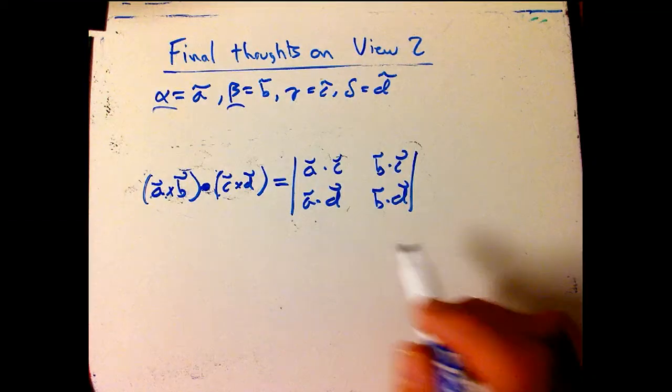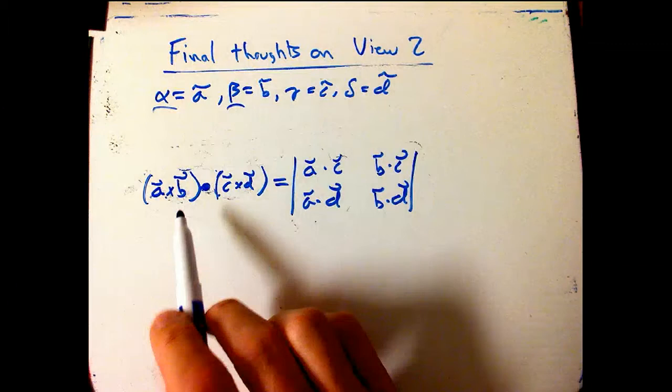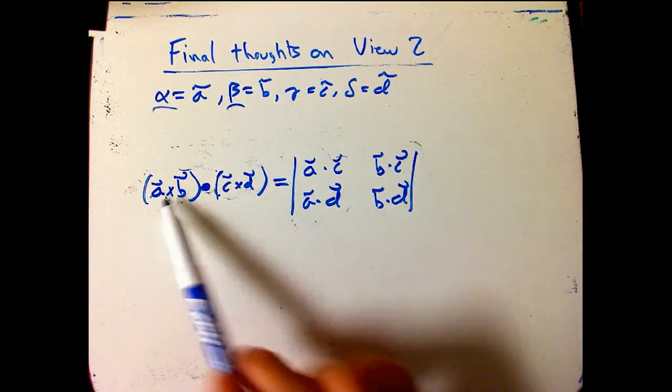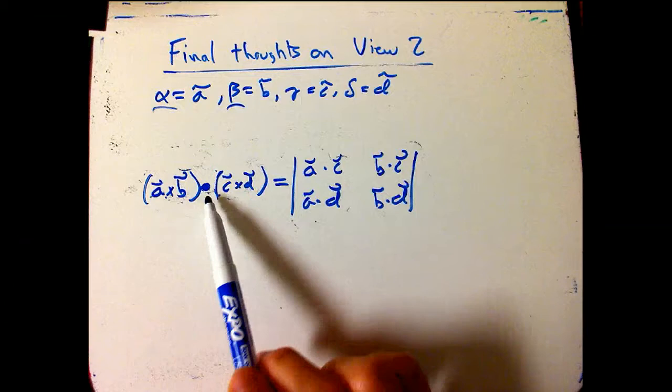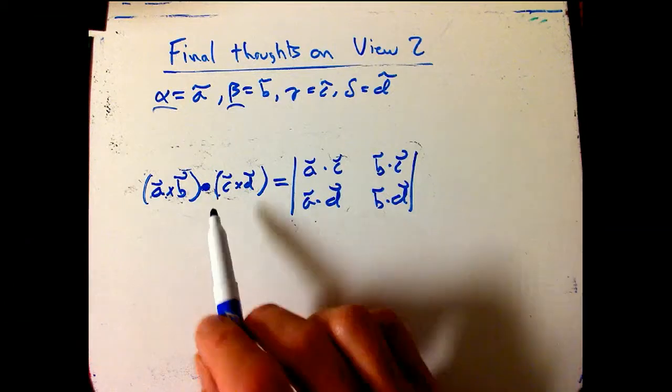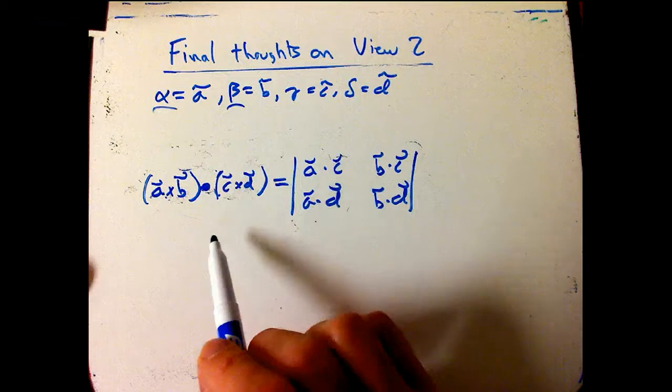So this is interesting. This is a little bit more than the triple vector product identity. It's got two crosses, but it's also got a dot in it. But we can massage this to be rather like the vector triple product with an extra dot in it, and then we'll take the dot out.